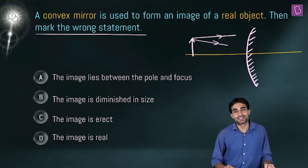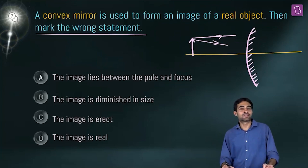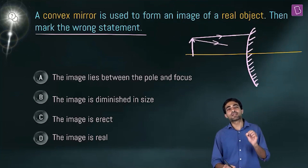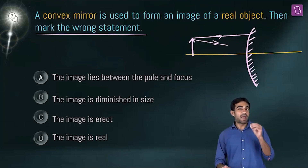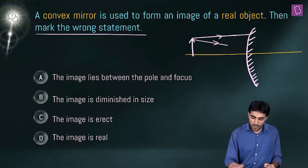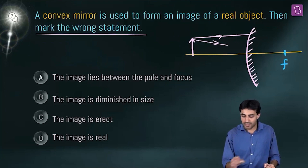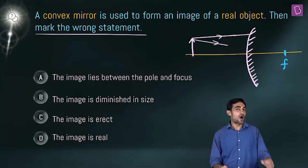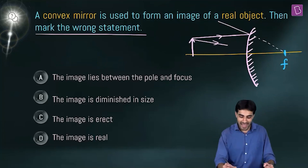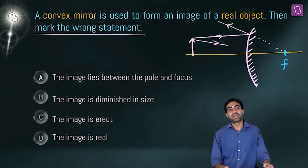To draw the image, we will use two light rays. The first light ray is parallel to the principal axis and incidents the mirror. After reflection, these parallel light rays should pass or appear to pass through the focus. The focus of this type of mirror is on the back side, and after reflection the ray appears to pass through focus.